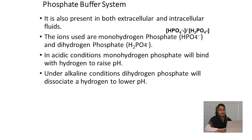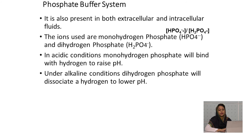The phosphate buffer system is also present in extracellular and intracellular fluid. The ions used are monohydrogen phosphate and dihydrogen phosphate. In acidic conditions, monohydrogen phosphate binds with hydrogen to raise the pH. In alkaline conditions, dihydrogen phosphate dissociates a hydrogen to lower the pH.